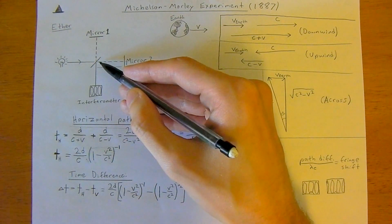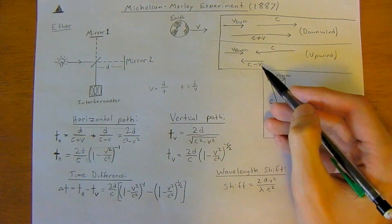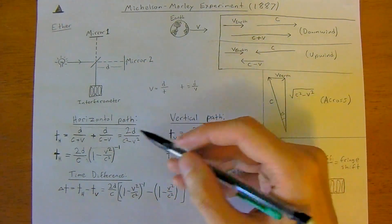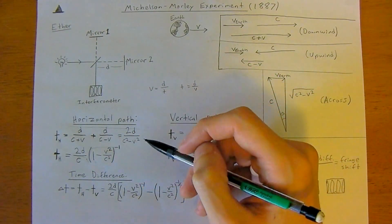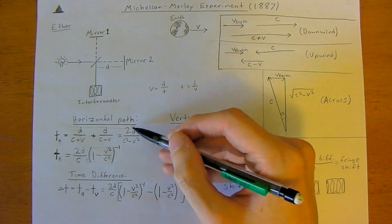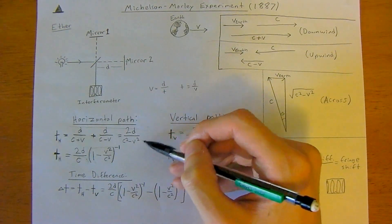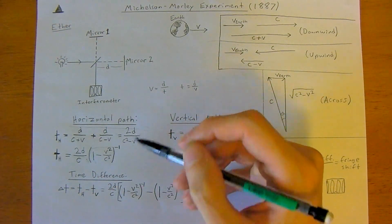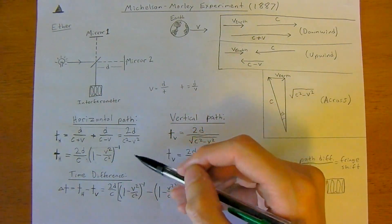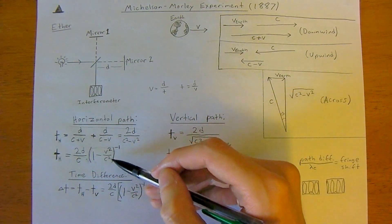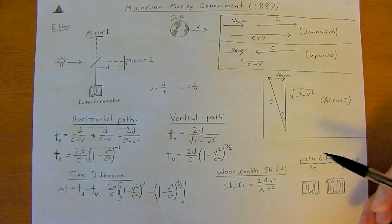So the time is d divided by c minus v. Then it's equal to just 2d divided by c squared minus v squared. To factor it out, factor out 2d: it's 1 minus v squared over c squared to the negative 1.